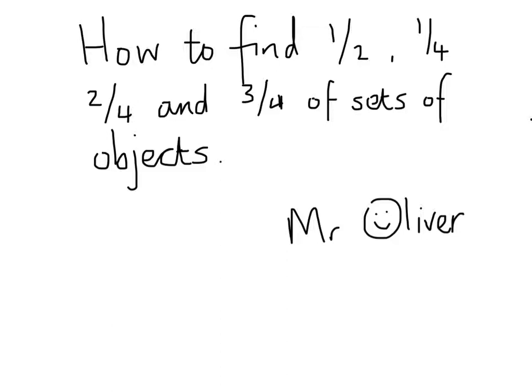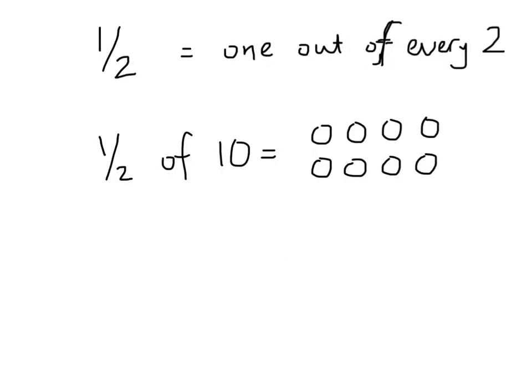Let's look at an example first. What about a half? A half means one out of every two. It can also mean sharing between two people, but we're not using sharing today — we're going to be using grouping. So let's look at the example of a half. One out of every two, or a half of ten, means that for every pile of two that you can see, shade one of them.